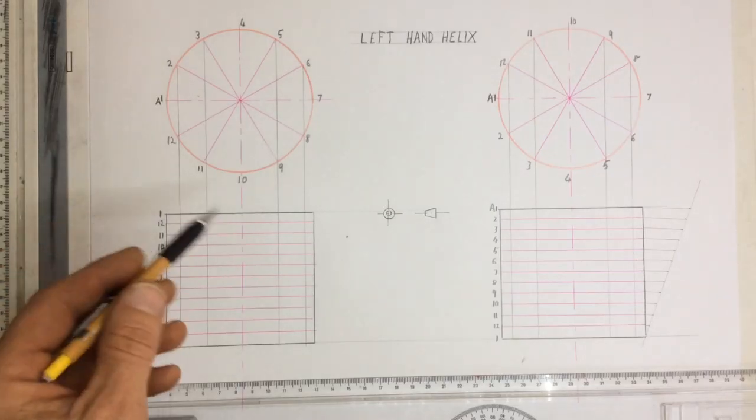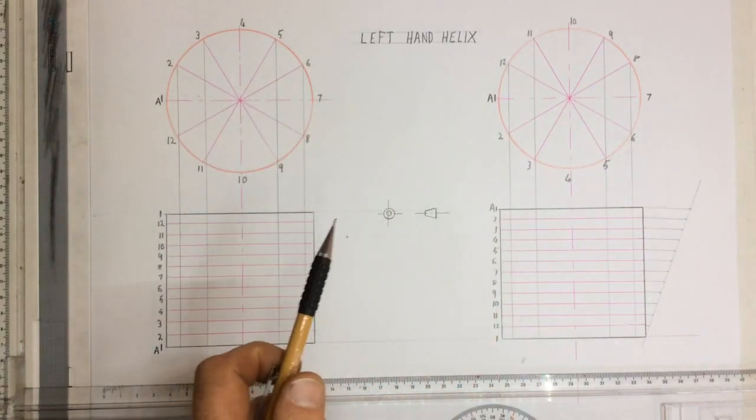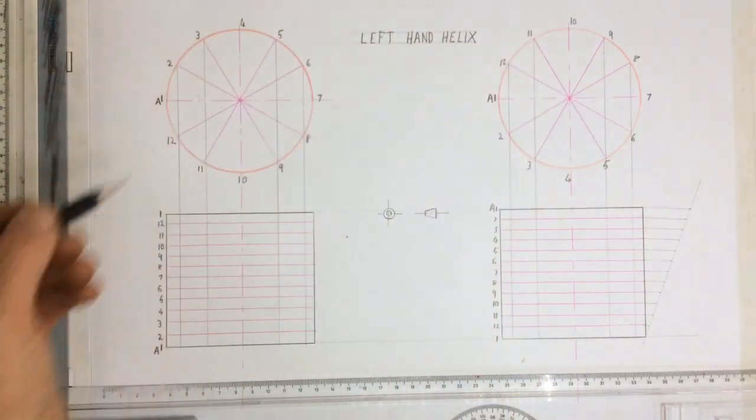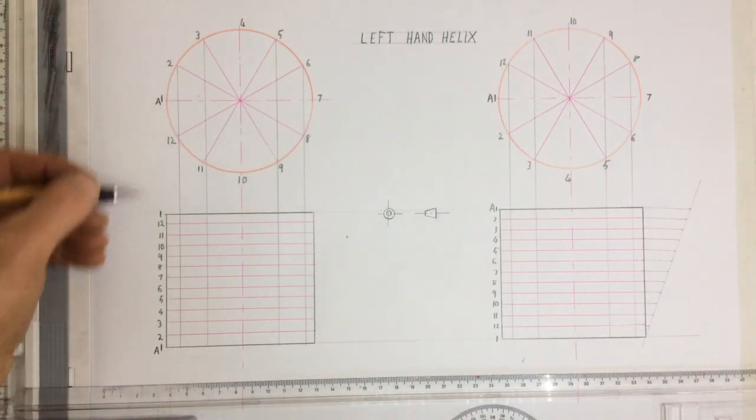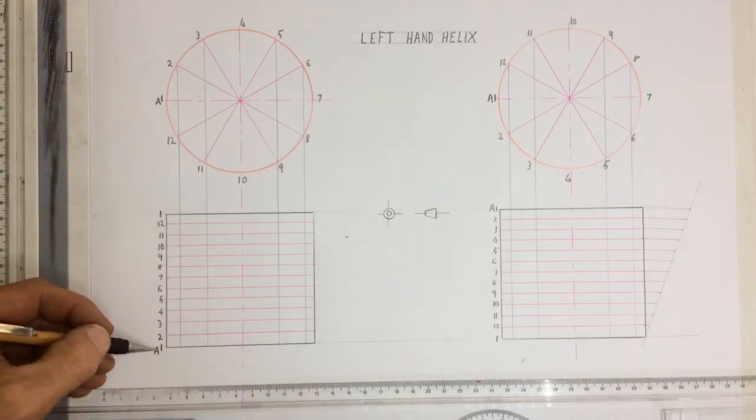In this video I'm going to try and describe how to do a helix. Over here I've got a left hand helix. You'll note that I've got numbering on these two circles and you'll note very especially that I've got point A. Point A on this view is at the bottom which means my starting point is at the bottom.